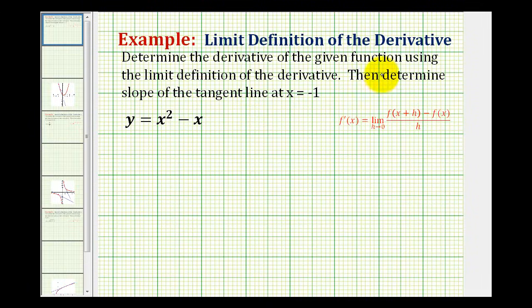We want to determine the derivative of the given function using the limit definition of the derivative, and then determine the slope of the tangent line at x equals negative one.